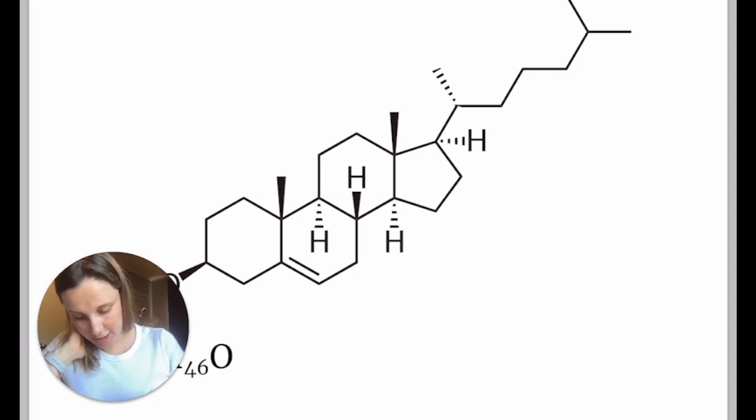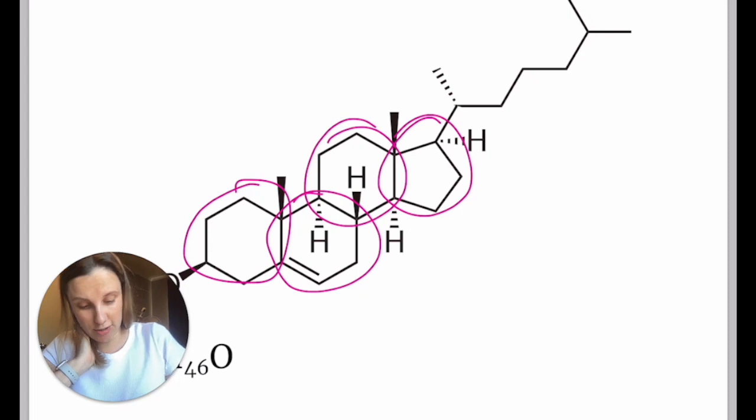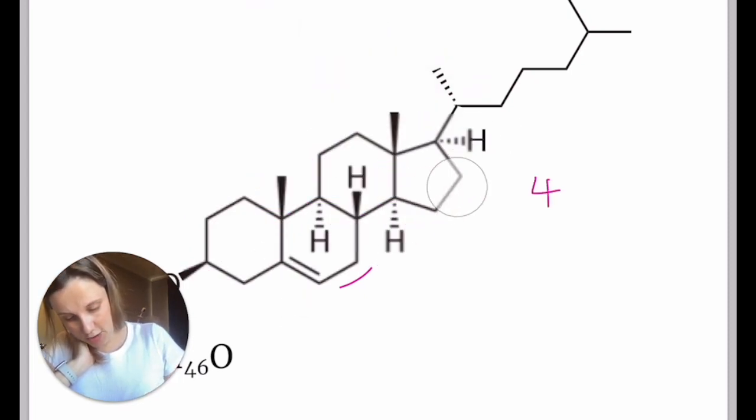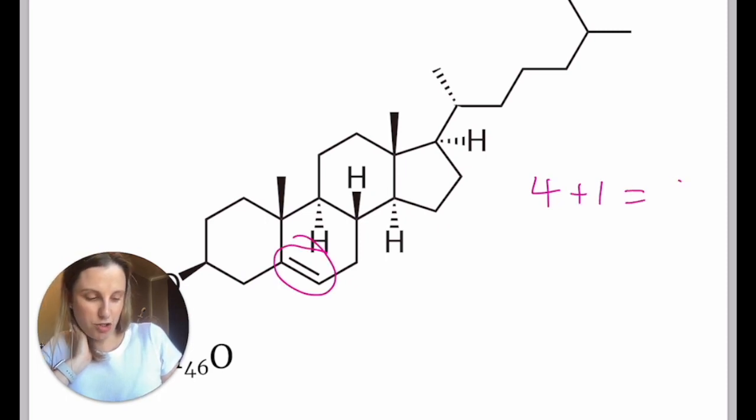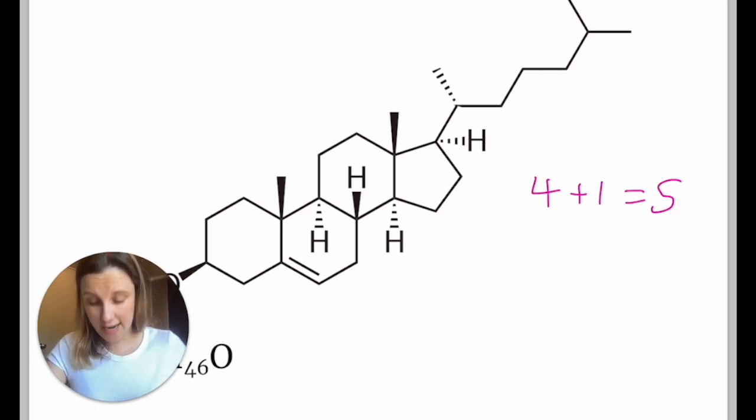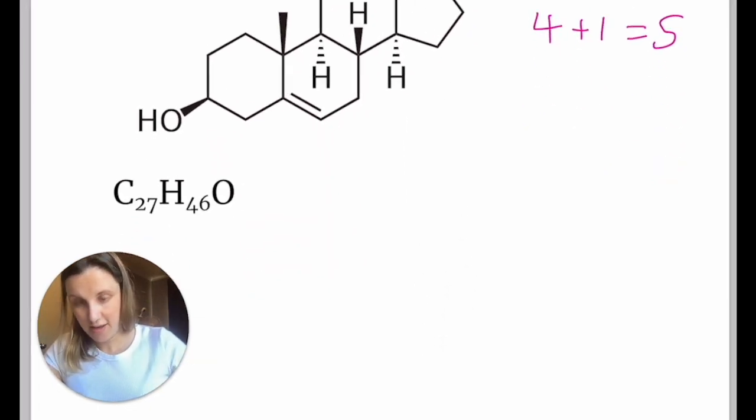Let's count it up using the structure and see what we should be getting as an answer. So let's count the rings first. You've got one, two, three, four rings in total. And then we have also got this double bond here. So we should get an answer of five, which is all good. Took me like three seconds.